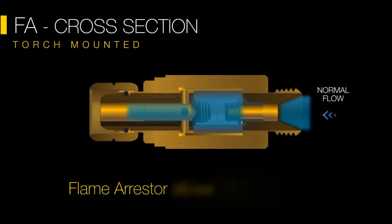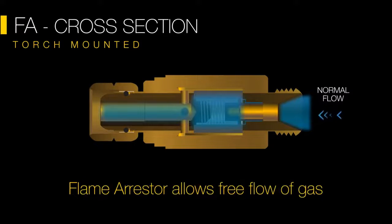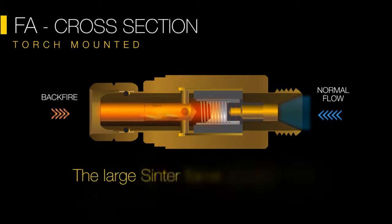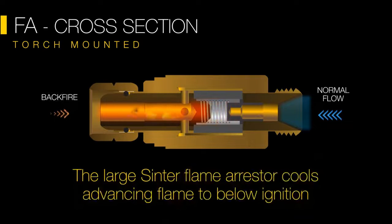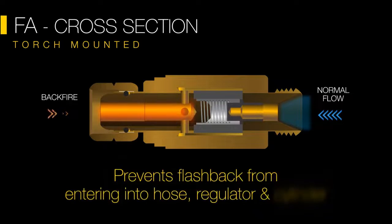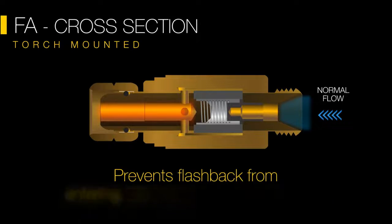The sinter flame arrestor allows free flow of gases with minimal pressure loss. It cools the advancing flame to below ignition temperature. The arrestor prevents the flame from spreading into hoses, regulators, and cylinders, helping to prevent major fire accidents.